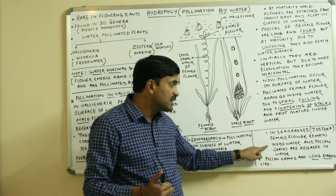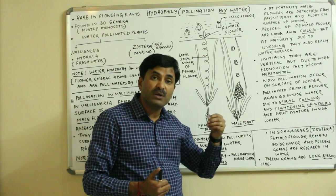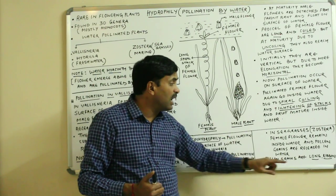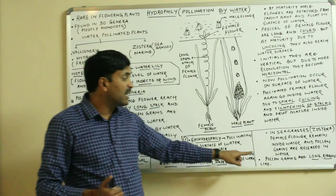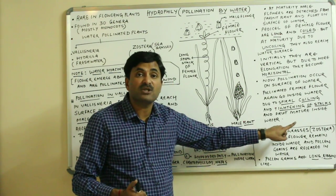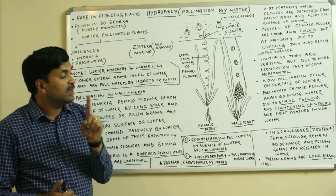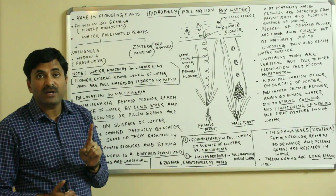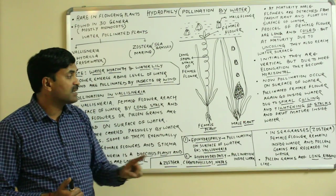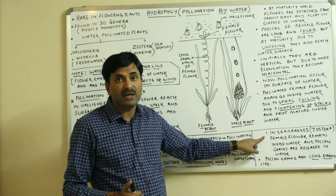In Zostera, the pollen grains released by the male flowers are also released inside the water, and the pollen grains here are long and ribbon-like. This was actually asked in the NEET exam — what type of pollen grains are found in the sea grass Zostera. These long ribbon-like pollen grains are passively carried by water currents towards the female flower, and pollination occurs.